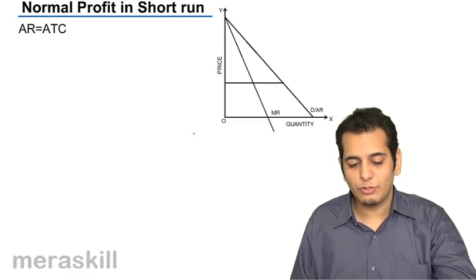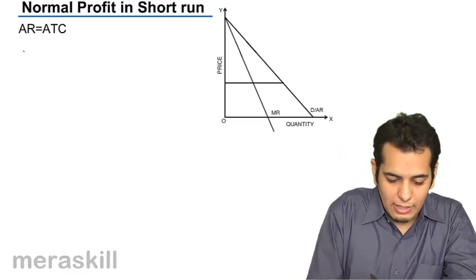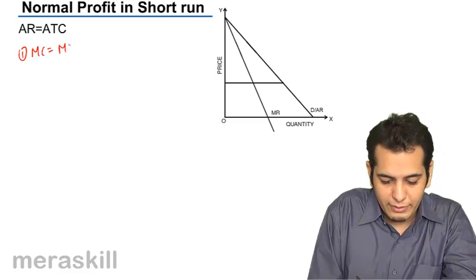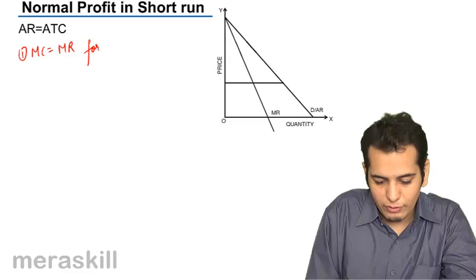Now, let's consider a situation of normal profits. Again, I'll have two steps. First, a point where MC equals to MR for equilibrium.